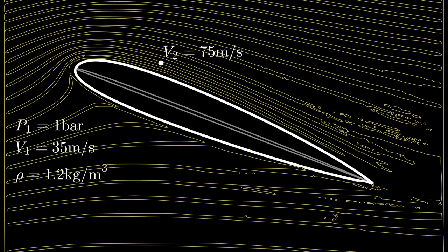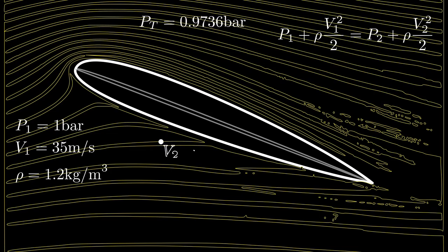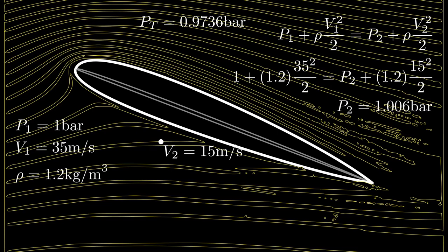We also take a measurement and find the velocity at this point above the wing to be 75 meters per second. We are also taking these measurements along the same streamline, which is necessary due to the limitations of the Bernoulli equation. Plugging all this in, we find the pressure at this point to be 0.9736 bar. Repeating this process with a velocity of 15 meters per second on the lower portion results in a pressure of 1.006 bar.